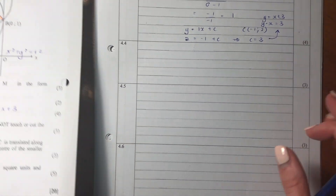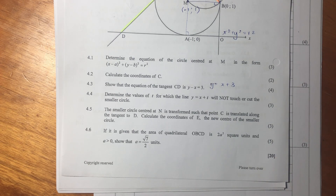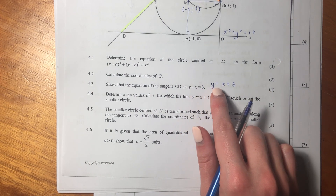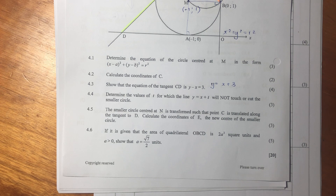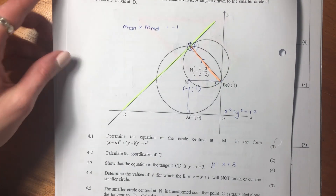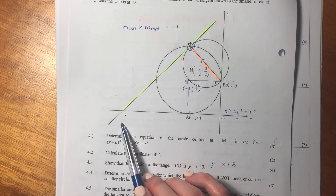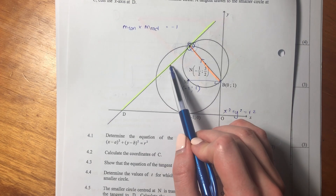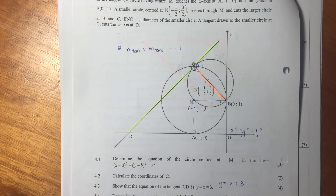For 4.3, show that the equation of tangent CD is y - x = 3, which can be written as y = x + 3 — a straight line in y = mx + c form. We have point C but not point D, so how do we find the gradient? Remember that the radius is perpendicular to the tangent, and the gradient of the tangent times the gradient of the radius equals negative 1. We can work out the gradient of BC and then find what the tangent gradient must be.